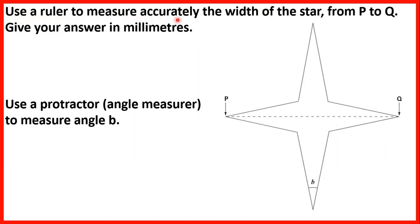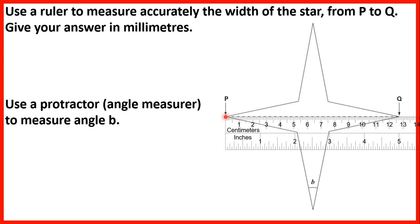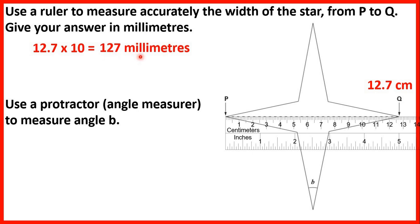Use a ruler to measure accurately the width of the star from P to Q. Give your answer in millimetres. We take our ruler and make sure 0 is lined up at this end of the line. Looking to the other end, we have 12 centimetres and then another 7 millimetres, so that's 12.7 centimetres. But we need to give our answer in millimetres. Because there are 10 millimetres in a centimetre, to change centimetres to millimetres we multiply by 10, giving 127 millimetres. An answer of 126 or 128 will also get the mark.